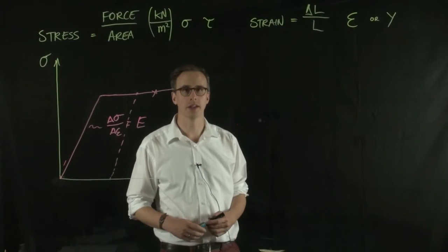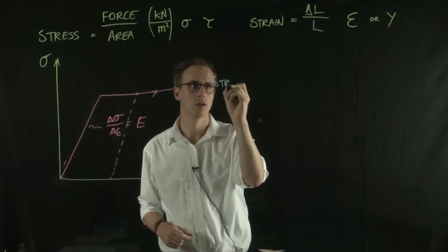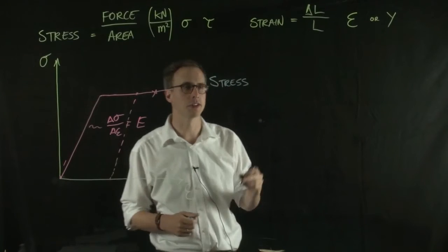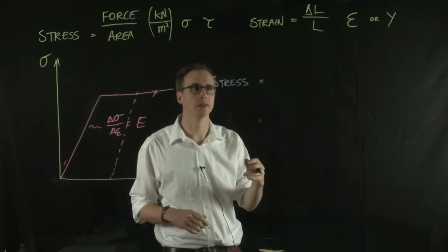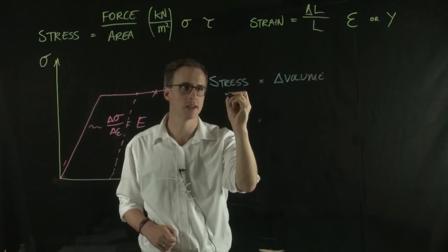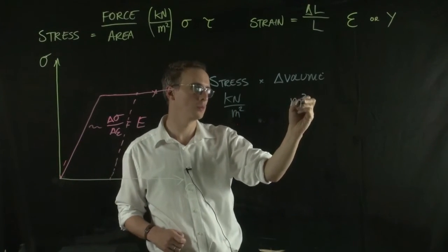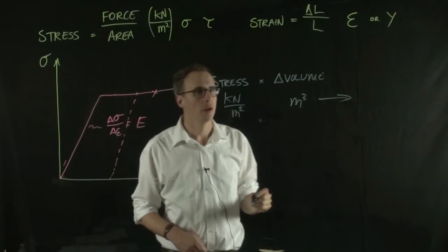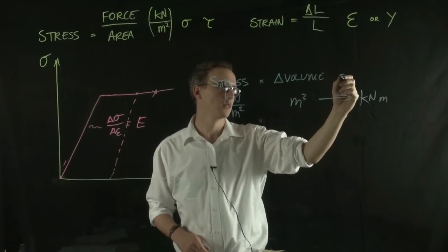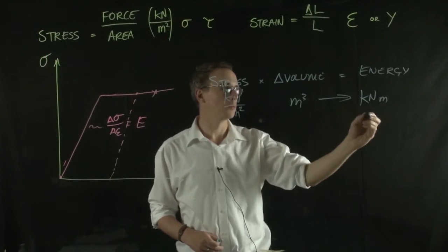One helpful way to think about it is to take a stress value and multiply it by the change in volume that the material is experiencing. If you look at the units - stress is kilonewtons per meter squared, and change in volume is meters cubed - the units we're left with are kilonewtons per meter, which is the units of energy. Kilonewtons per meter is the same as a kilojoule.